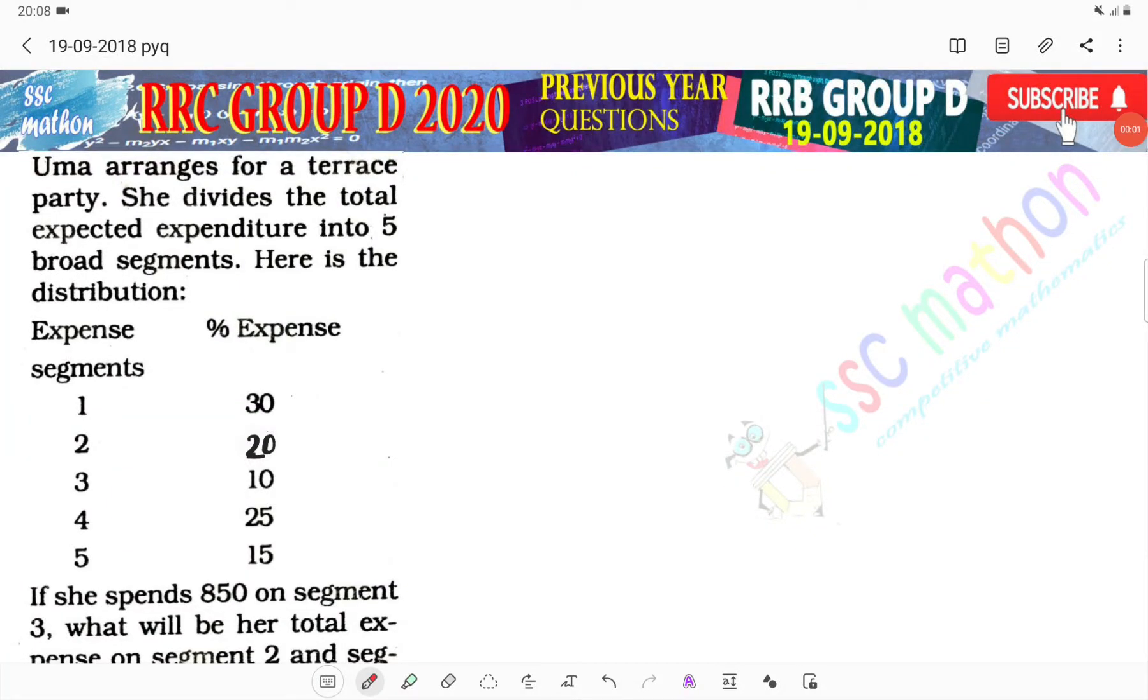Hello everyone, welcome back to SSC Mathon RRB Group D 2018 question. Uma arranges a terrace party. She divides the total expected expenditure into 5 broad segments. Here is the distribution.